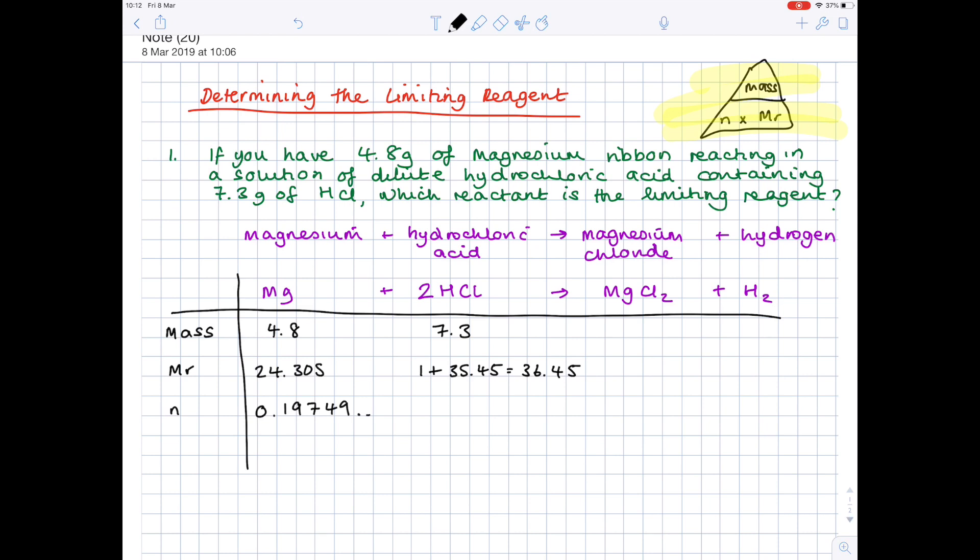Now at this point, what you want to do is work out the theoretical number of moles of hydrochloric acid. All that involves is looking at that number you've just calculated, having a look at these big numbers that occur in front of the formulas. In the case of hydrochloric acid, it's 2. So you double that number to work out the number of moles of hydrochloric acid. That would be 0.34980.